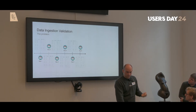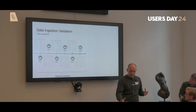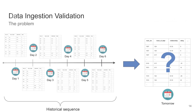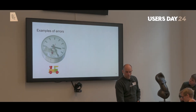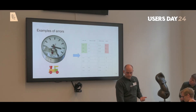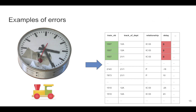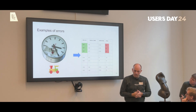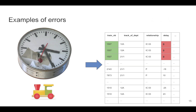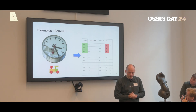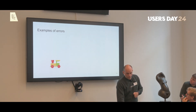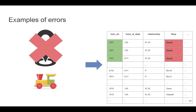The data ingestion validation problem is: given this historical sequence of data collected throughout history, can we validate the batch of tomorrow — data we have never seen before — to check whether it is of good enough quality? Errors that can occur include a single train with a broken clock that always reports exactly zero delay because it arrives and departs at the same time. Another error might be a GPS sensor going down, causing a train to always think it's at the same station.